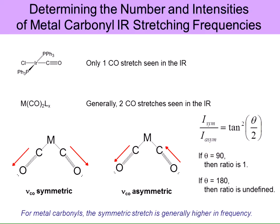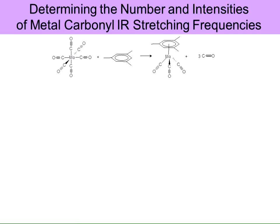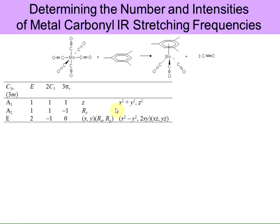In lab, we typically do a synthesis where we make a molybdenum tricarbonyl. We start with molybdenum hexacarbonyl and react it with mesitylene to make a piano-stool-type complex. If we find the point group of this molecule, we find that it's C3v, and we can describe the CO stretching frequencies.